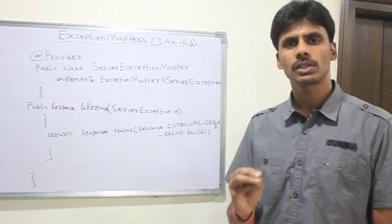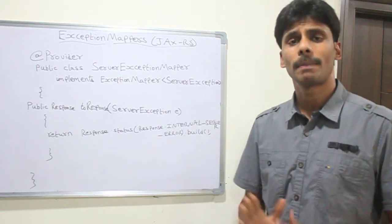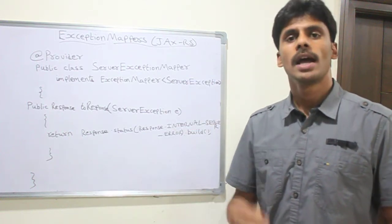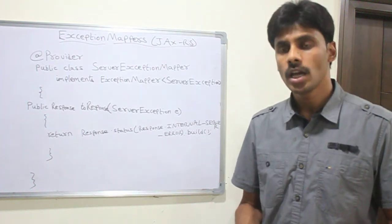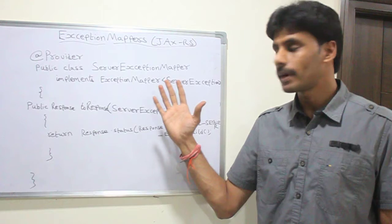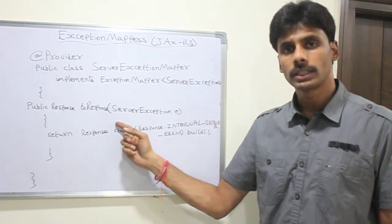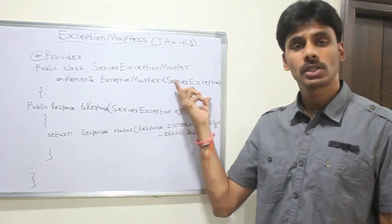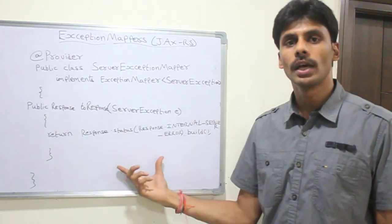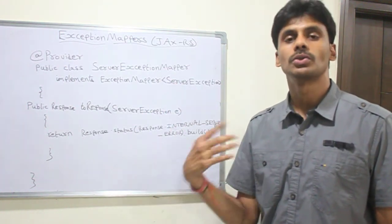you can define a set of mappers for different exceptions your applications may throw at various points. And the JAX-RS containers like Apache CXF or Jersey will call these mappers and the appropriate methods at runtime to build the or map the exceptions that are thrown by your applications into the HTTP error codes that should go back to the client.